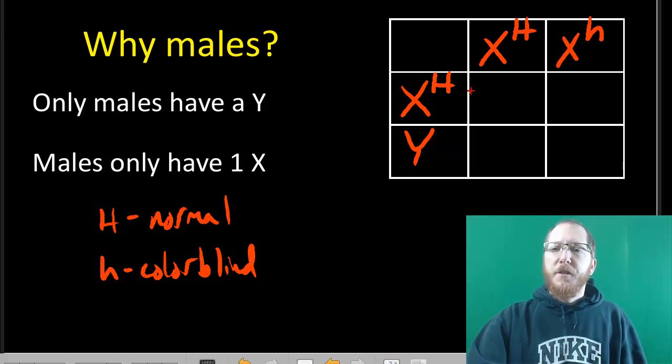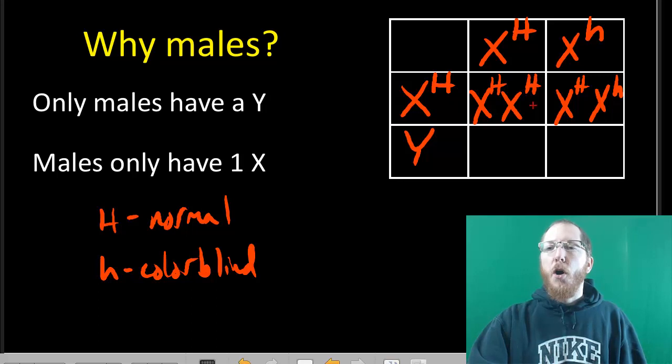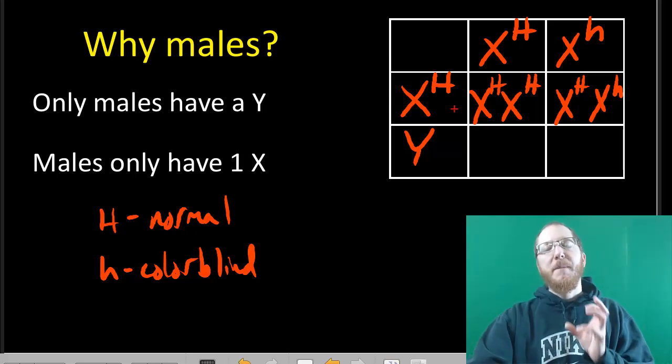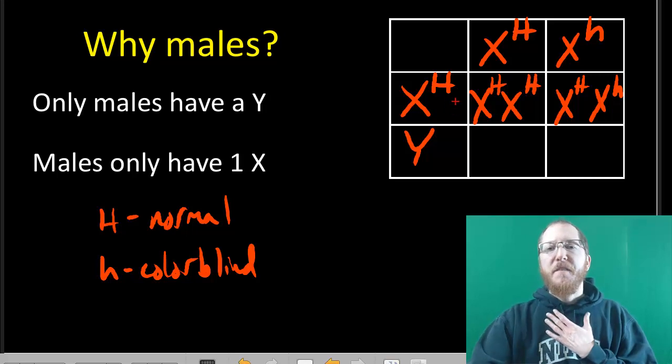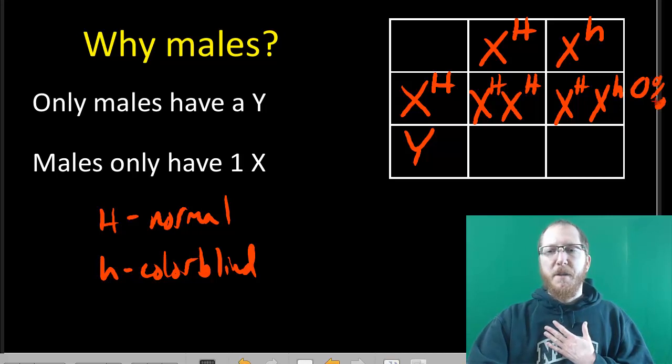You can start to see here that the daughters, which will be up top, they're both going to be healthy. And the reason I can guarantee that is dad will always give his particular allele to all the daughters. So if the dad's healthy, there's no way the daughters can be affected. For a daughter to be affected, both the dad has to be unhealthy, as well as the mother has to at least be a carrier. In this case, because the dad's healthy, all the daughters will be fine. So none of the daughters are going to be affected.